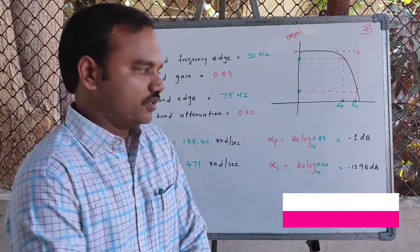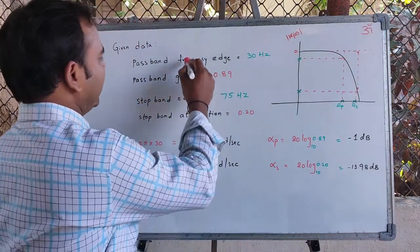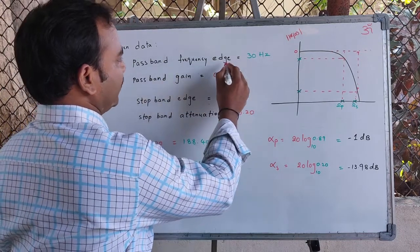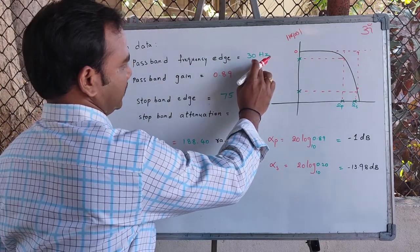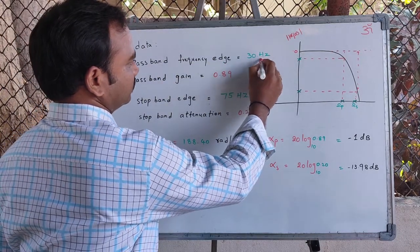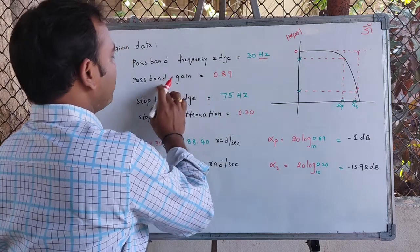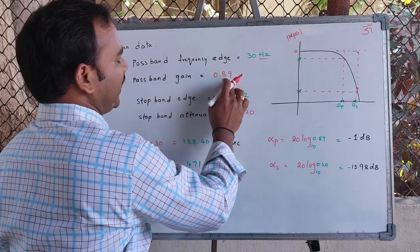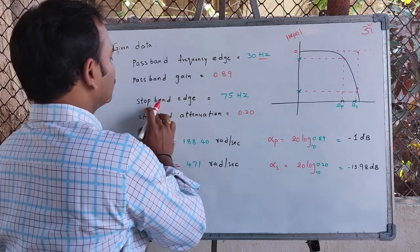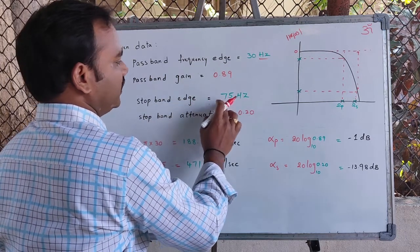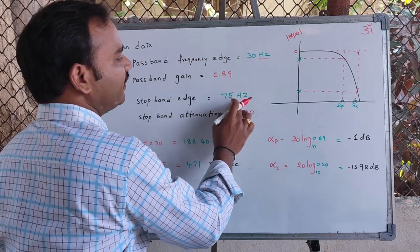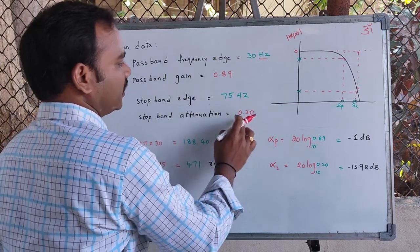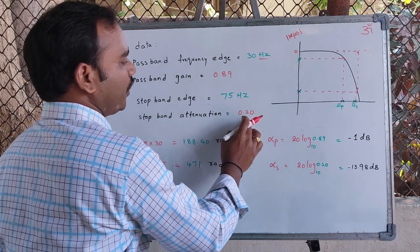From the given specifications, we have the following data: passband edge frequency is 30 Hz, passband gain is 0.89, stopband edge frequency is 75 Hz, and stopband attenuation is 0.20.